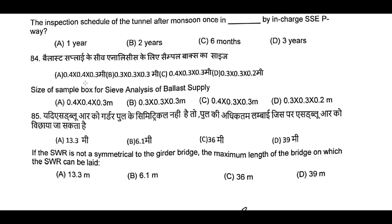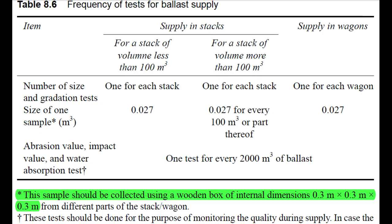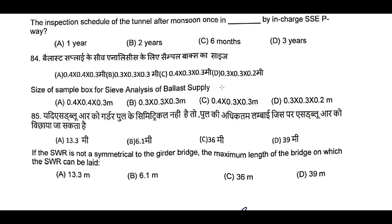Question Number 84: Size of sample box for CVO analysis of ballast supply. To collect the ballast sample for analysis, 30 cm x 30 cm x 30 cm size. Question Number 84, B is the correct answer: 0.3 x 0.3 x 0.3 meter.